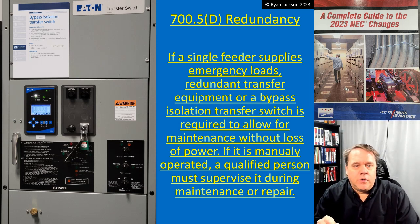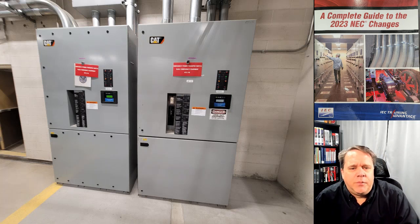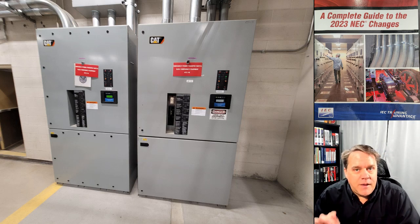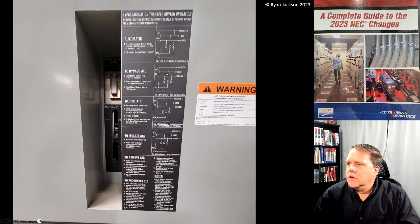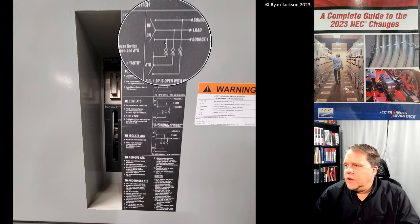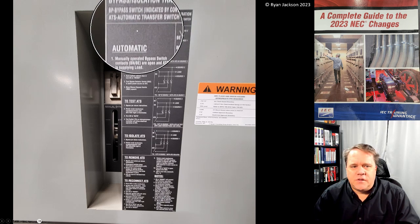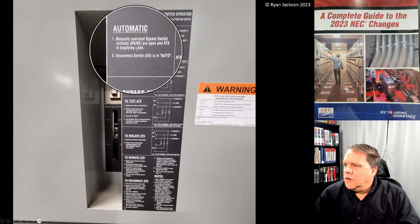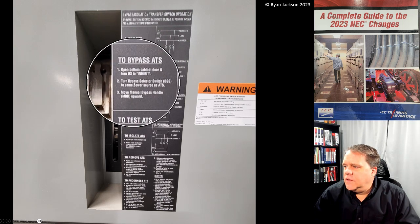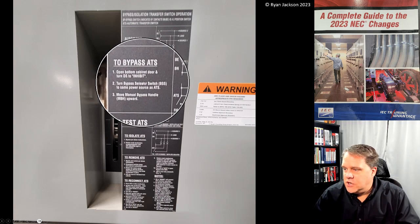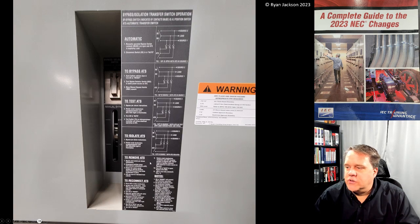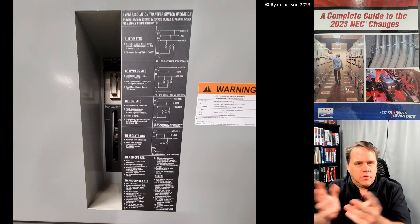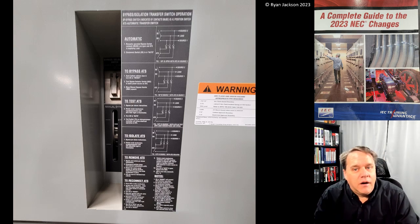And that's what we're looking at here in the photograph. This is a real-world example at a hospital that I was fortunate enough to tour. These are both bypass isolation transfer switches. To go into automatic mode you do this, and to bypass the ATS you can change it by doing this. You can also test it, remove components, and there are instructions on how to do it — all without losing the functionality of the transfer equipment.